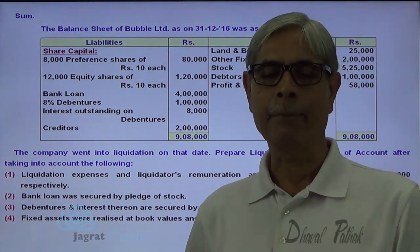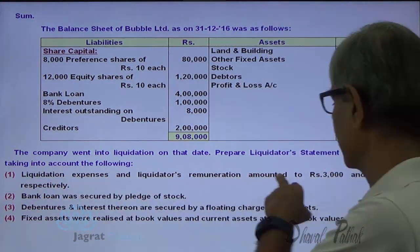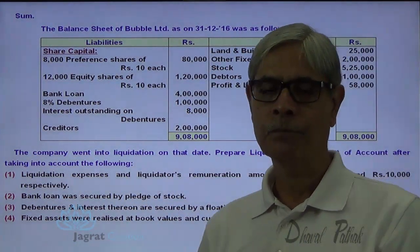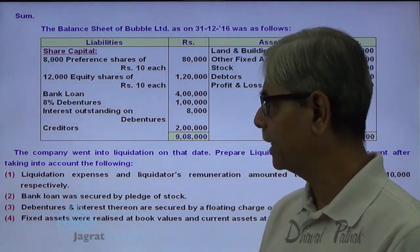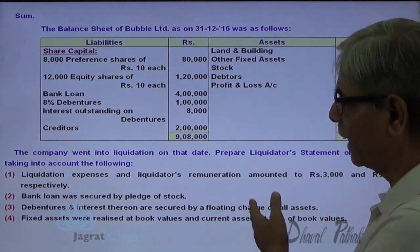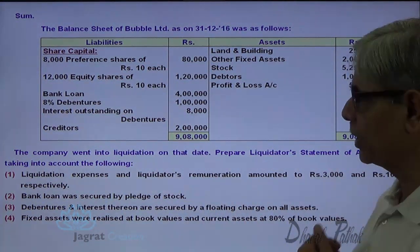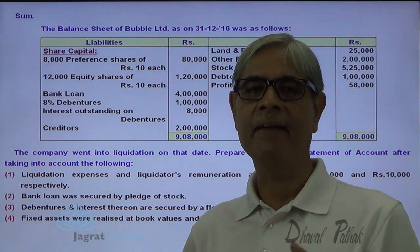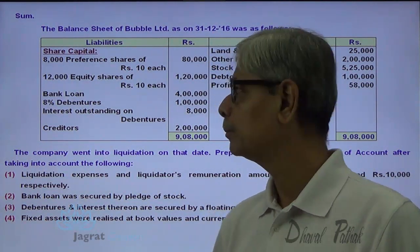After making payment to fully secured creditors, you are required to make payment of liquidation expenses of 3,000 and liquidator's remuneration of 10,000. Then you have to pay preferential creditors. Creditors are 2 lakhs, but from the additional information I don't find any preferential rights availed by any creditors, so preferential creditors are 0.